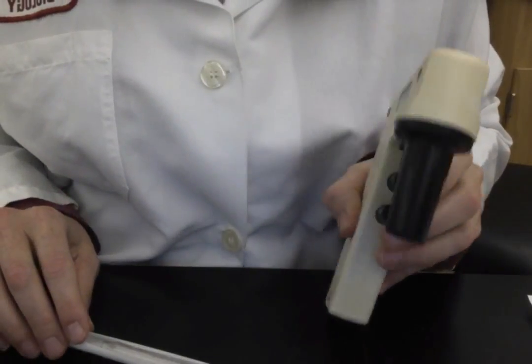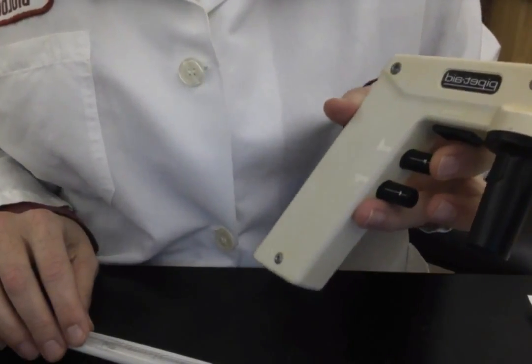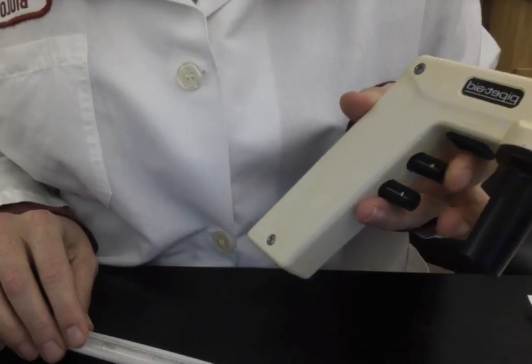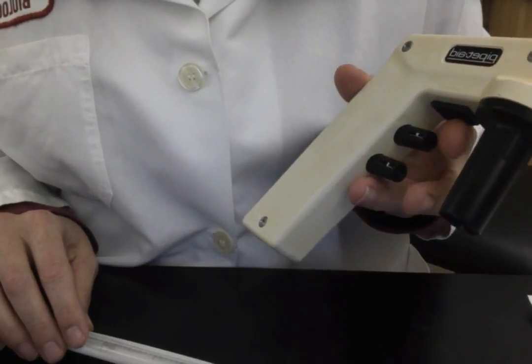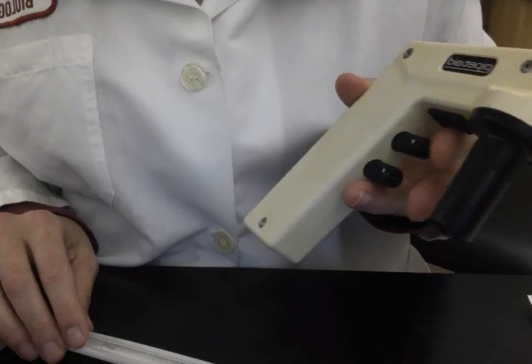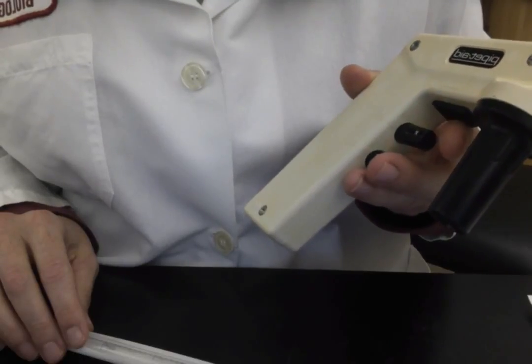This video is going to show you how to use an automated pipetter. The main things to remember are the top button is up, the bottom button is down. So the top button brings fluid into the pipette and the bottom button expels it.